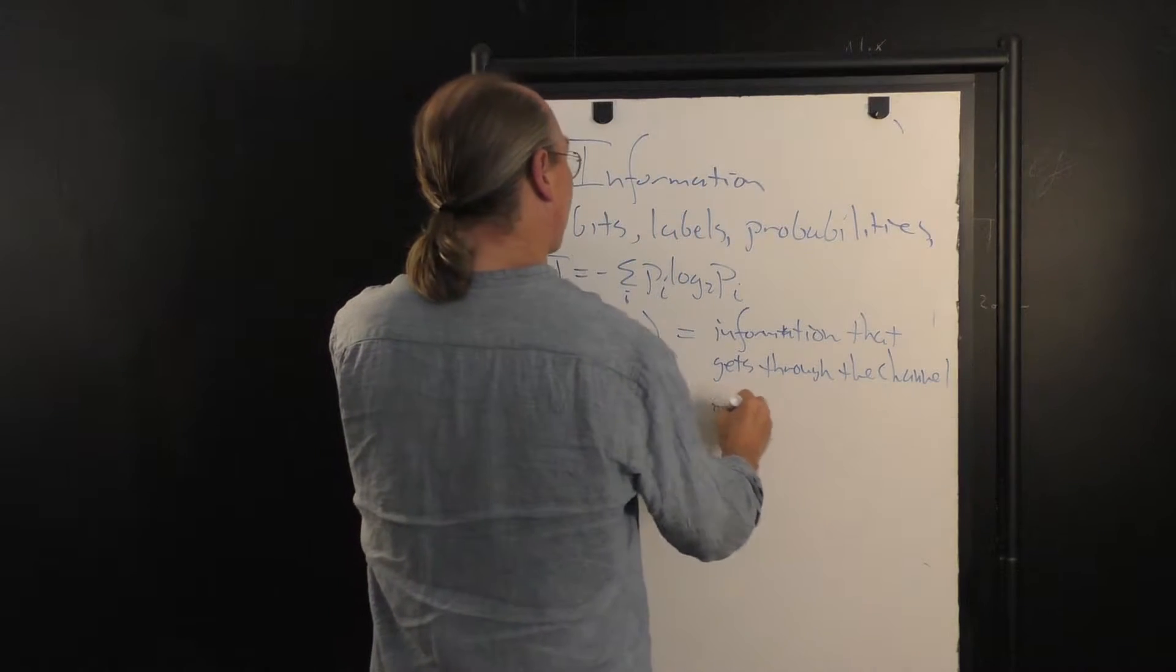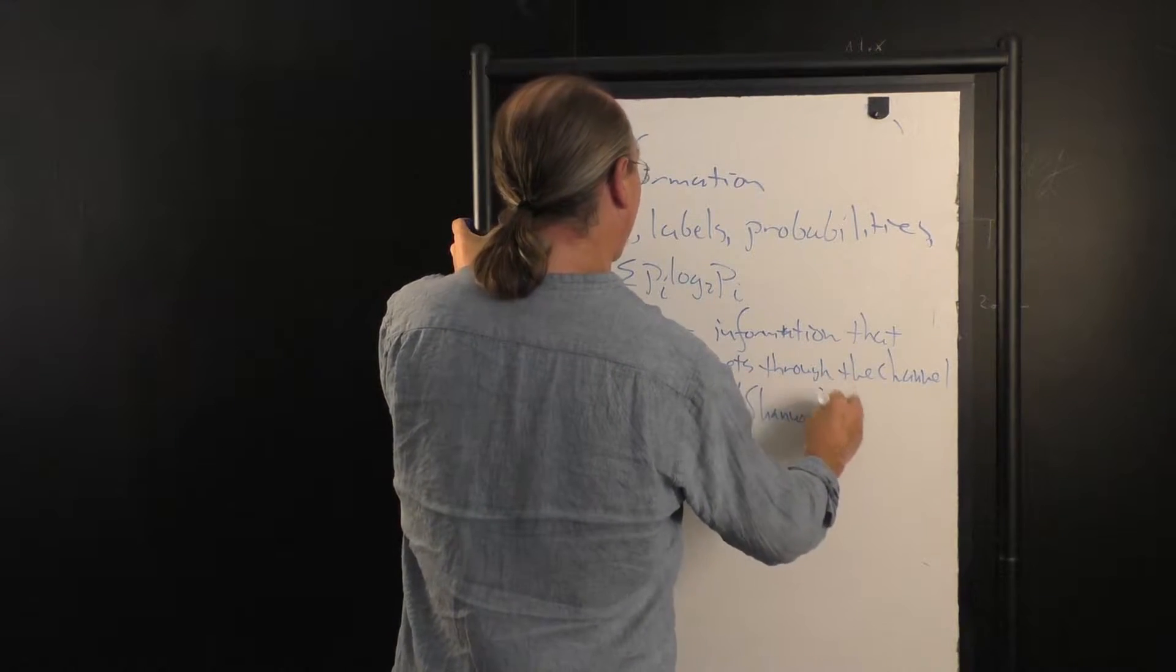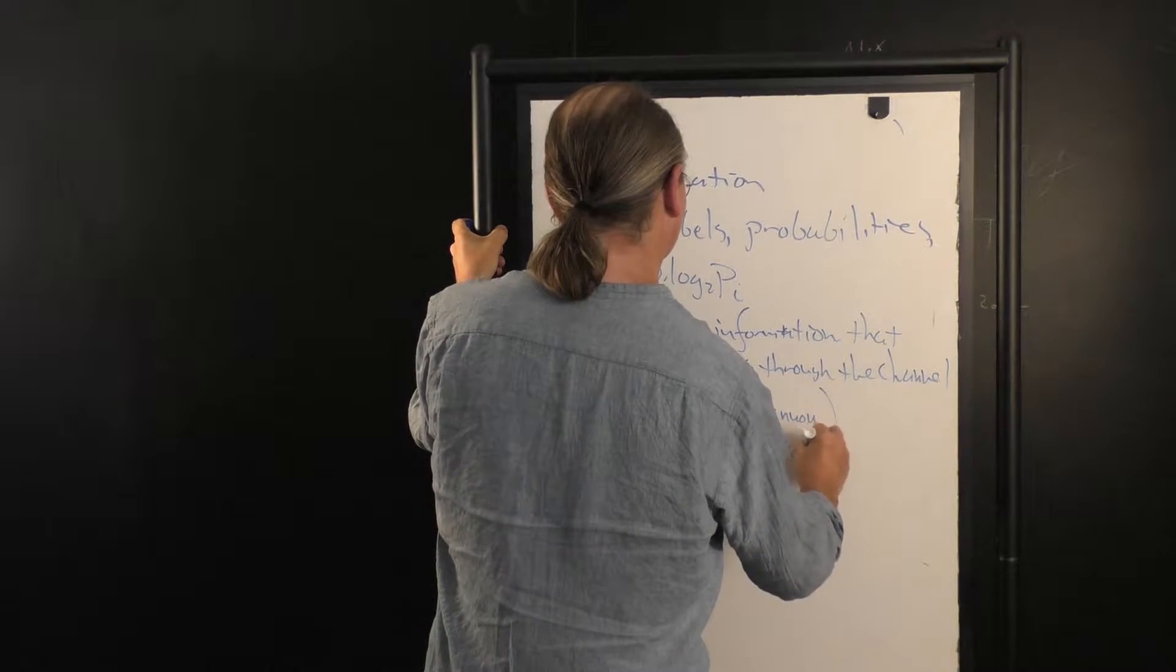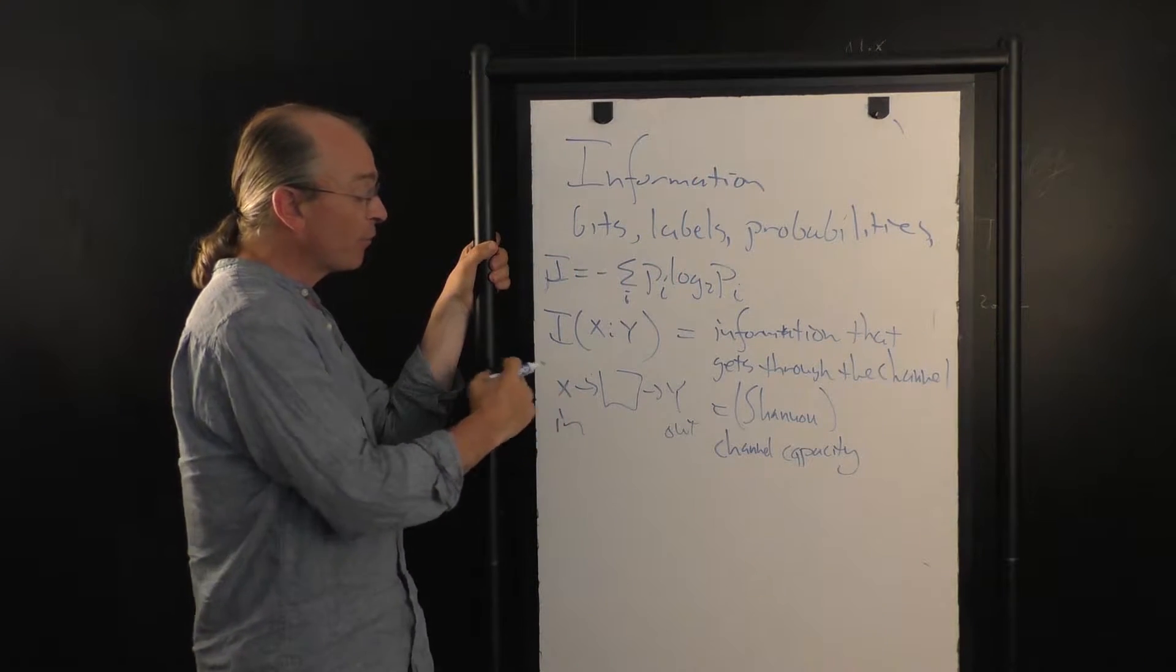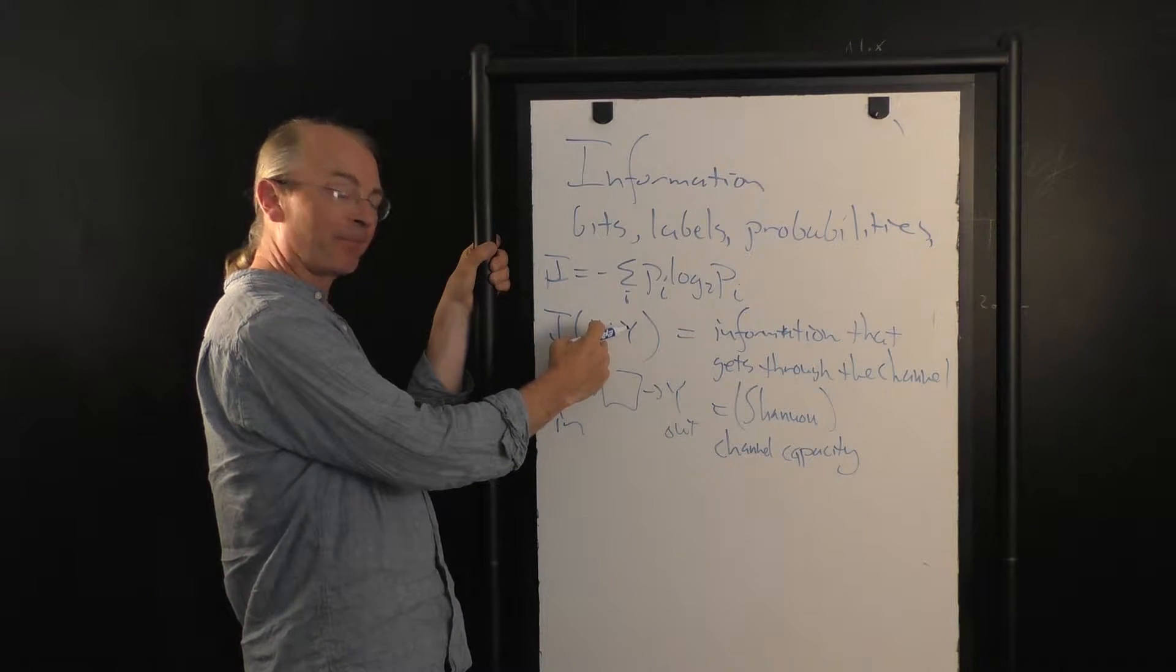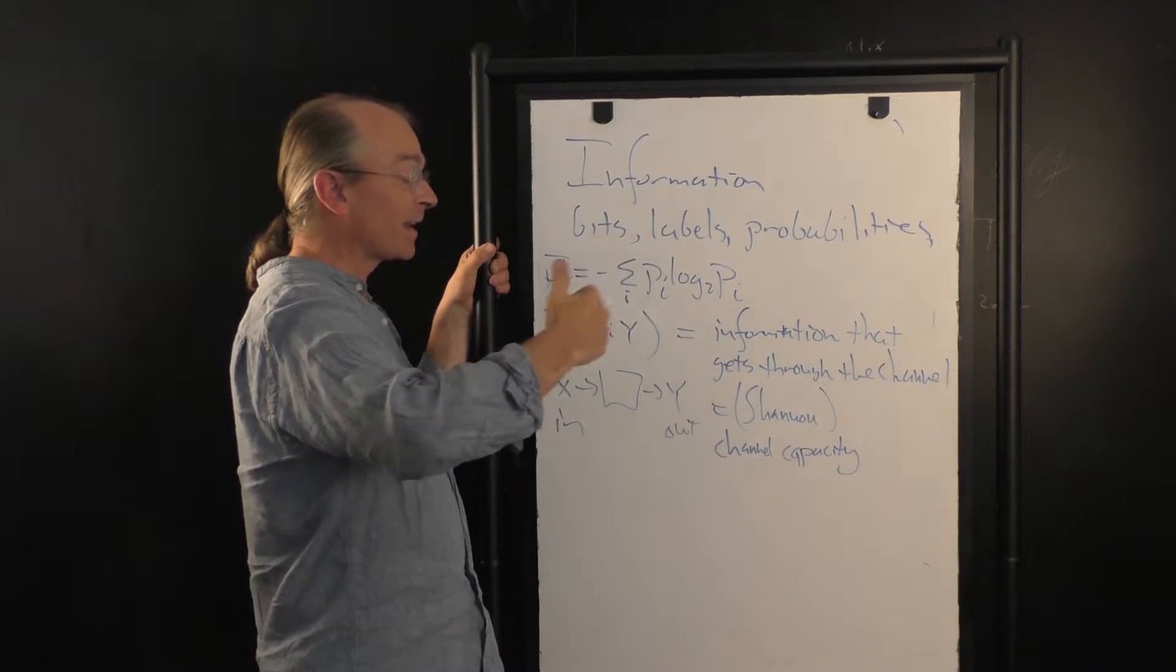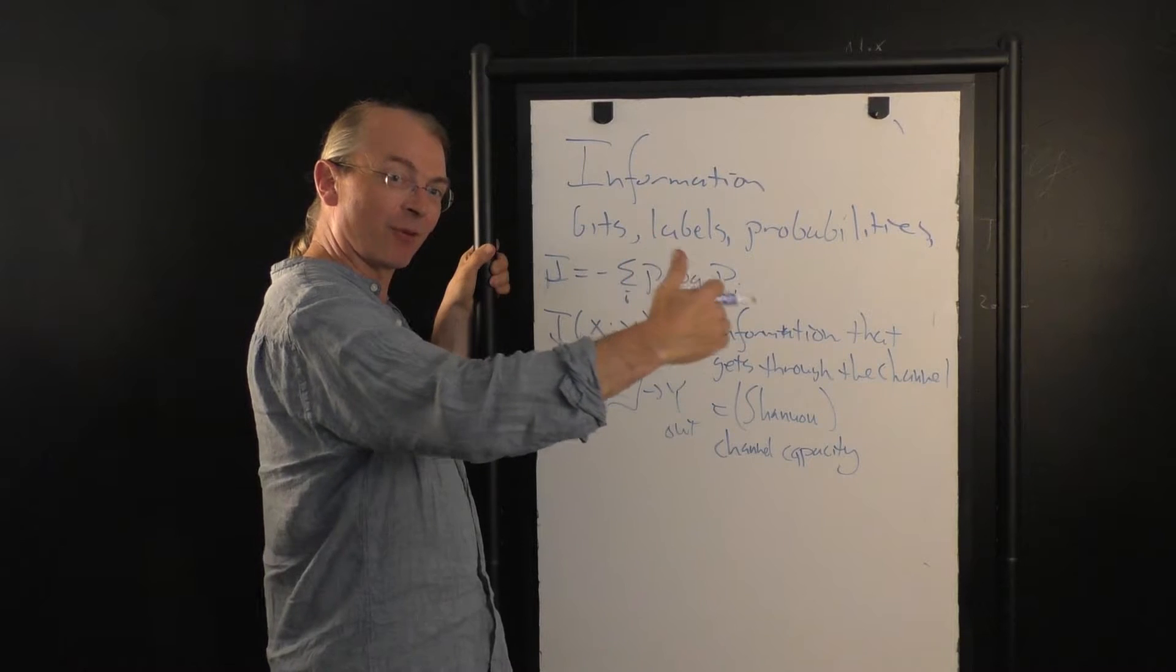And from Claude Shannon, it's actually equal to the practical channel capacity. Or if I pick the input probabilities or frequencies that maximize the mutual information, that mutual information is the rate at which information can be sent reliably down this channel. You cannot send information at a higher rate and you can send information at that rate.